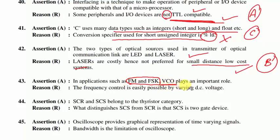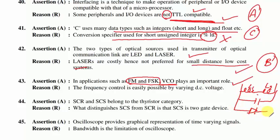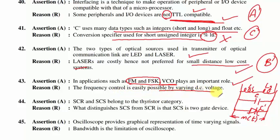Question 43: in FM and frequency shifting applications, a voltage-controlled oscillator (VCO) plays an important role — true. The tank circuit uses inductors L1 and L2 and a capacitor; a varactor diode is connected across it. Applying a DC voltage changes the effective capacitance, varying the frequency: f = 1/(2π√LC), where L = L1+L2 and C_eq = C + C'. Frequency control by varying DC voltage is easily possible — true. Option A is correct.